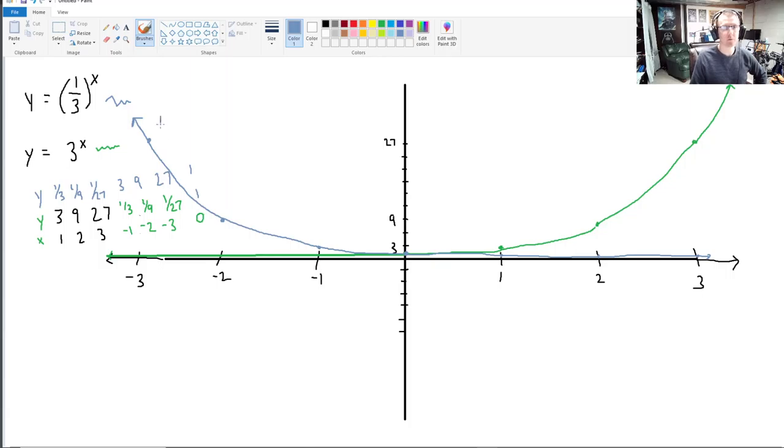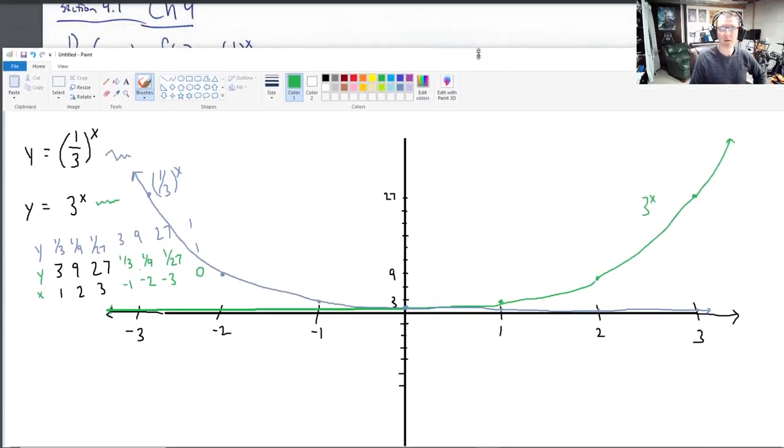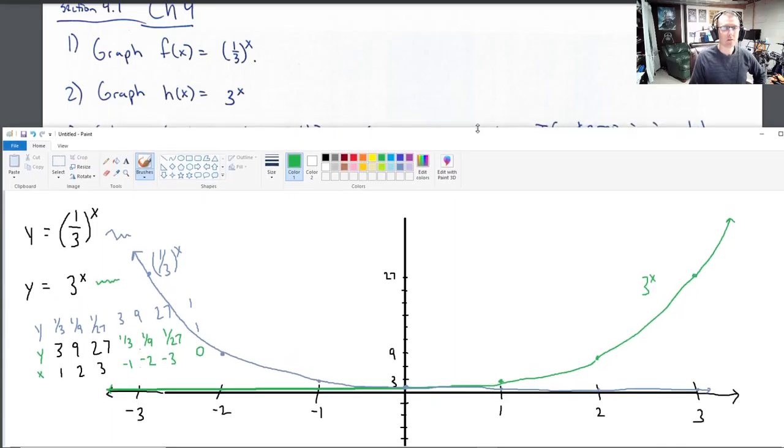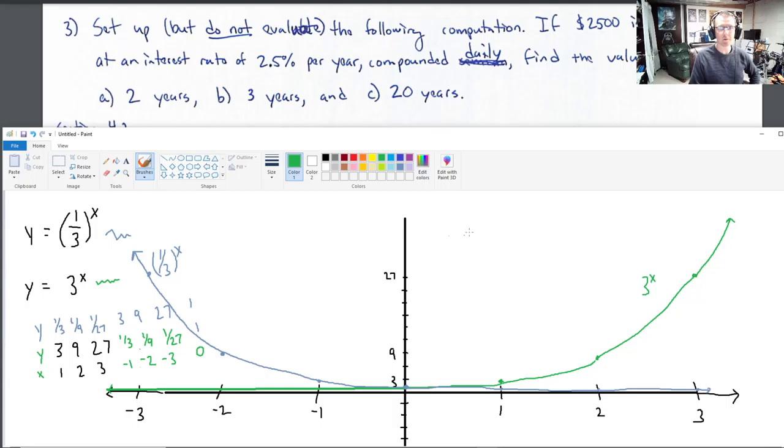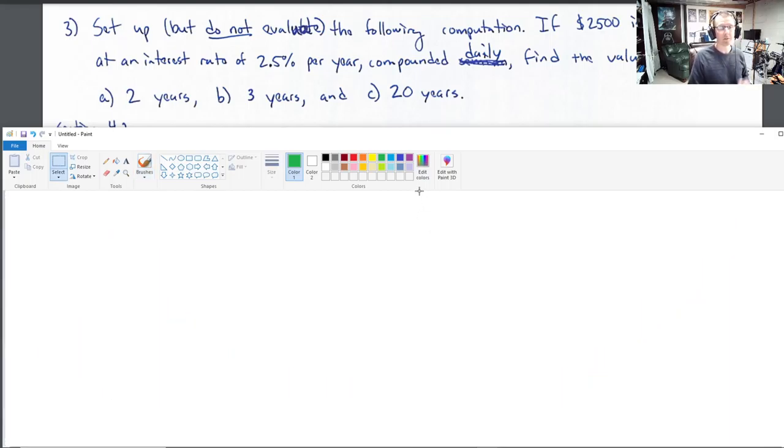So that's it. That's 1 third to the x. And this one was 3 to the x. There you have it. Graphs of those two exponential functions. So that's questions 1 and 2. Question 3, set up but do not evaluate. That means don't use a calculator to do this. It means just write down how you would do it.